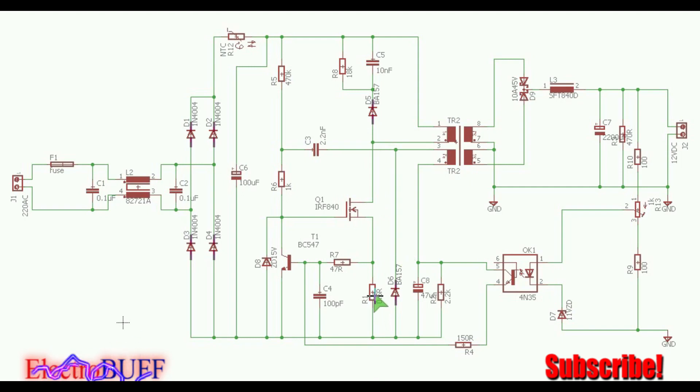As the current increases, the voltage across this current sensing resistor will increase. The value is 0.5 ohms, and so at about 1.5 amperes the voltage at this node will be sufficient enough to turn on this BC 547 transistor. When it turns on, it will immediately connect the gate of the MOSFET to ground and the MOSFET will be switched off completely.